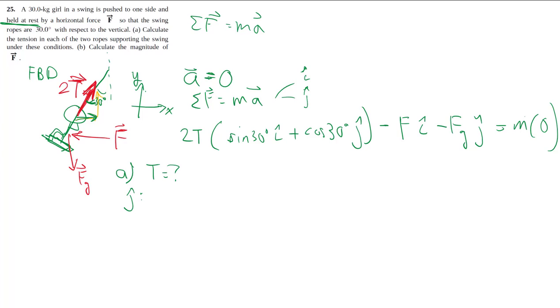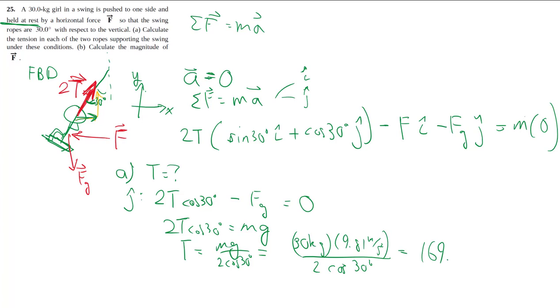Because that doesn't involve my unknown force. And then it's still going to be equal to zero. Fg of course is mg and then we can isolate for T including that two in there. Because there are again two ropes not just the one. So there we have our answer 170 newtons.